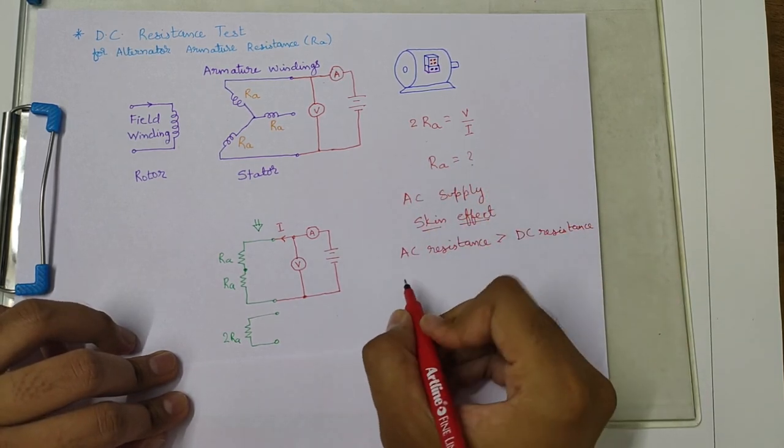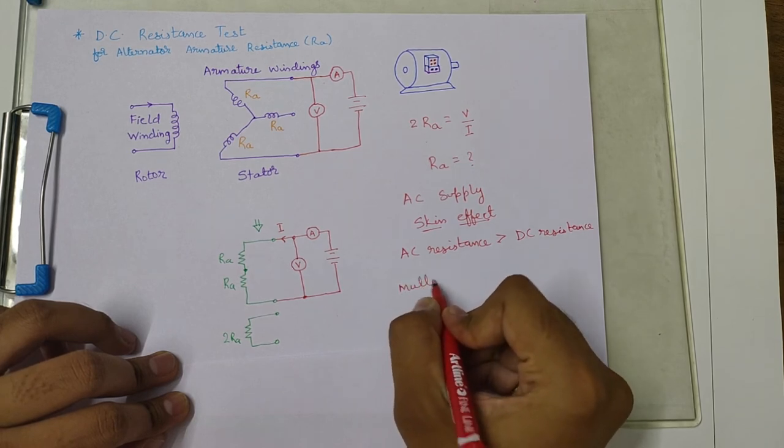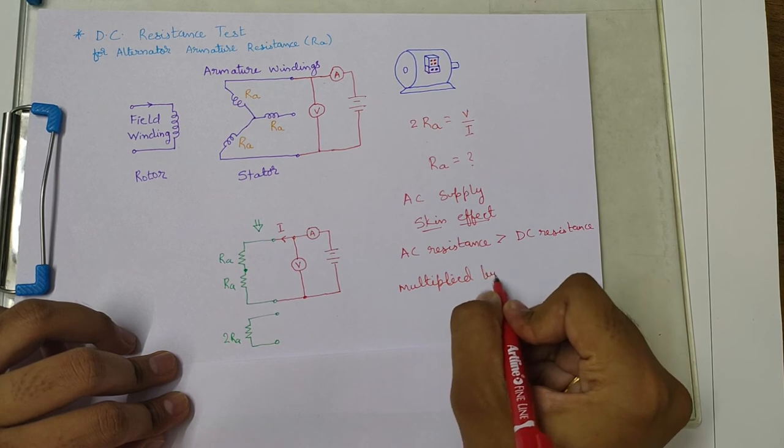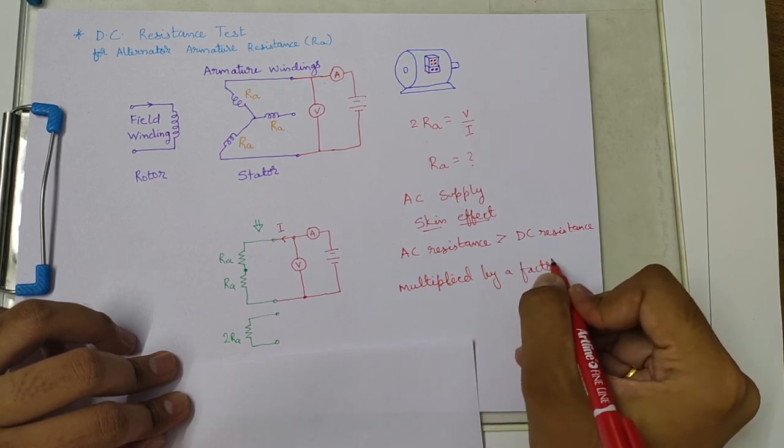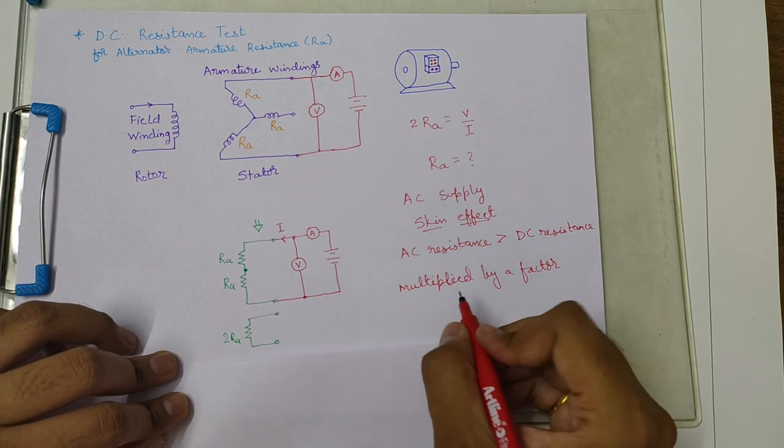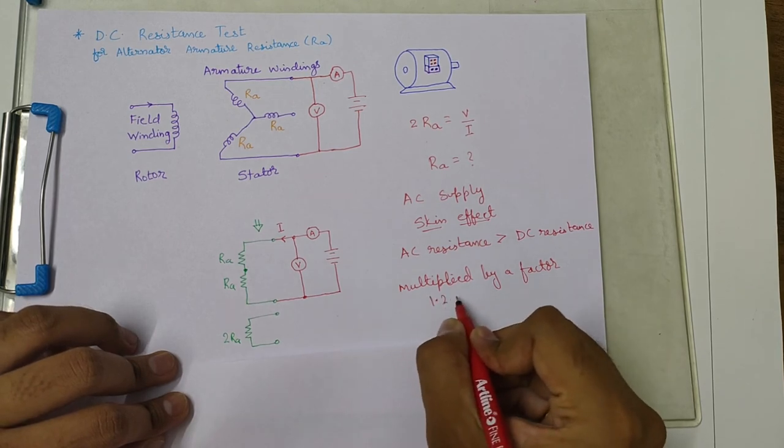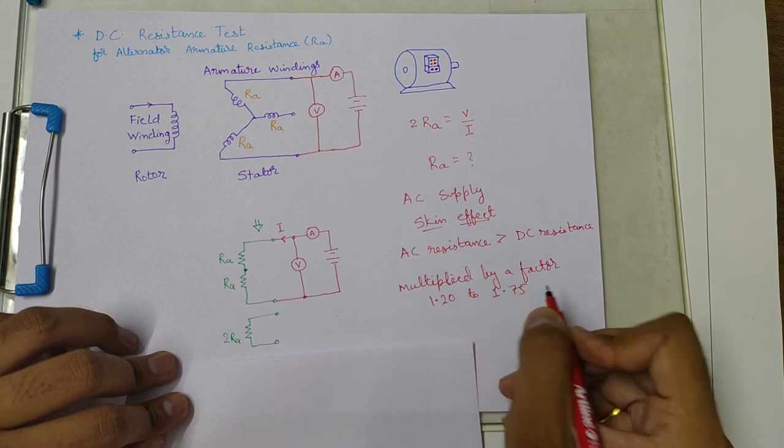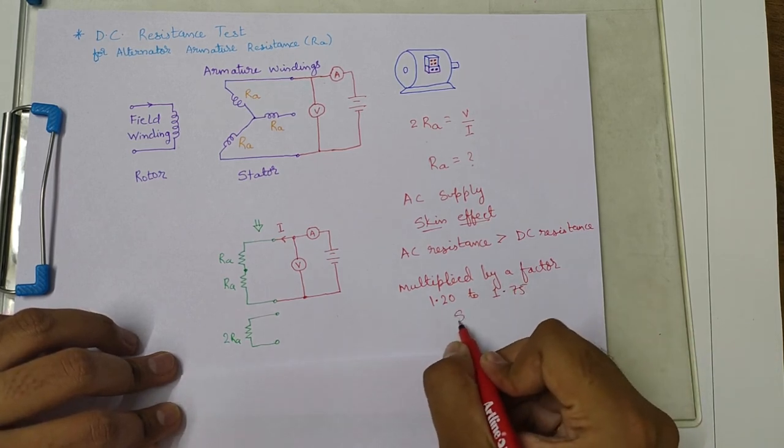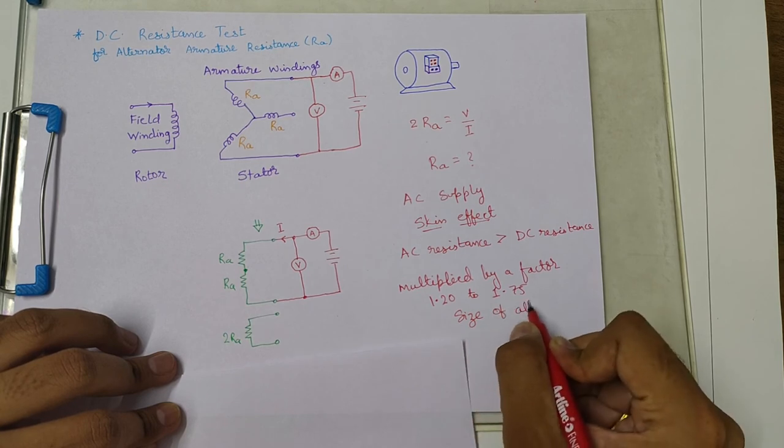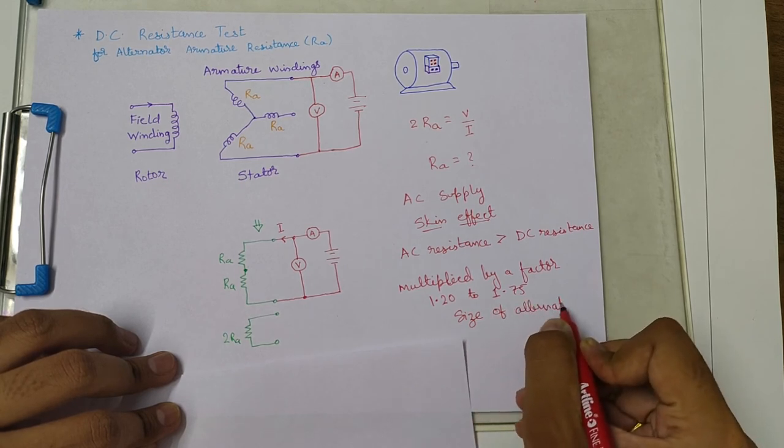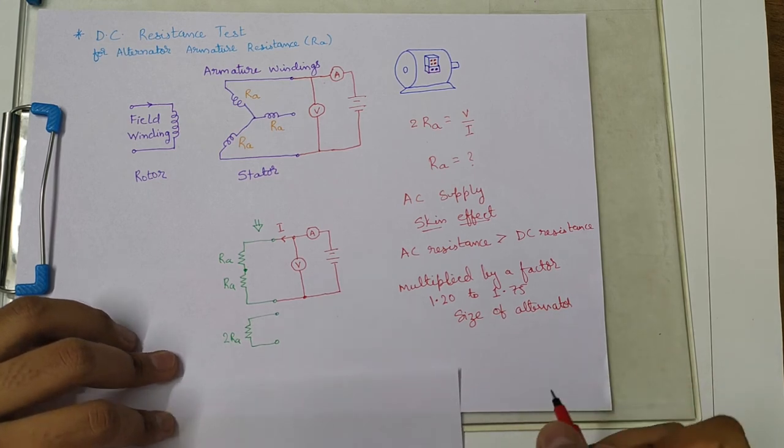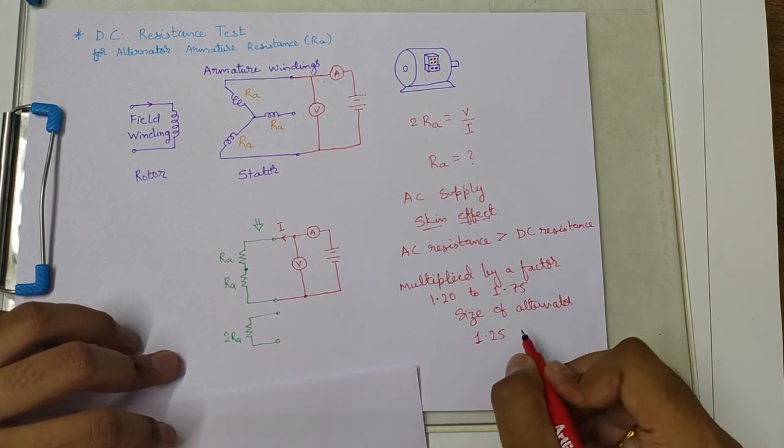So what do we do with this value? Usually it is multiplied by a factor of 1.20 to 1.75 depending on the size of the alternator or the rating of the alternator. Usually a 1.25 multiplier is taken.